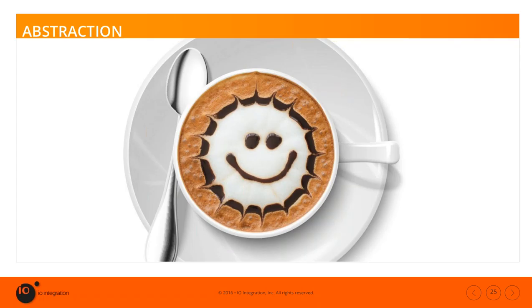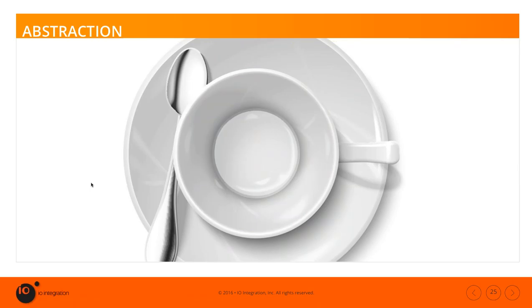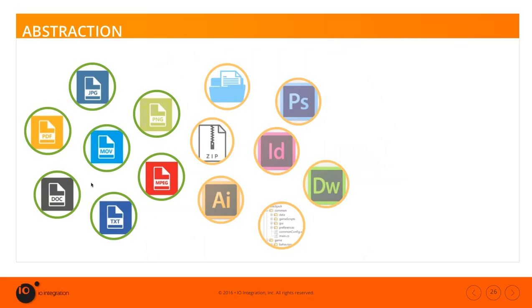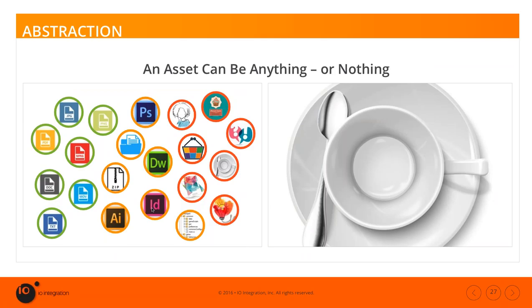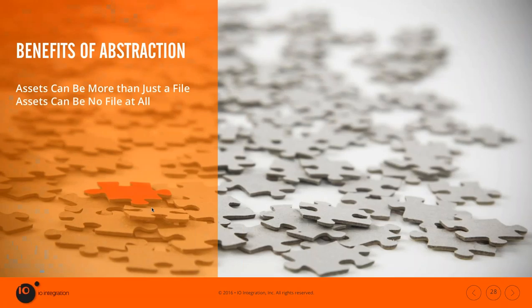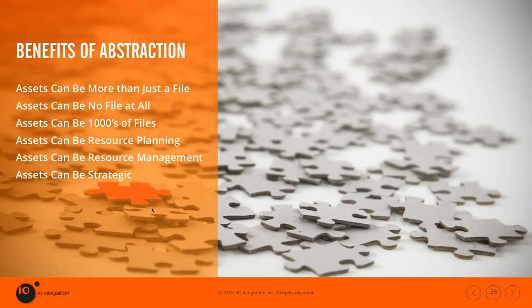Assets do not have to have something concrete associated with them — the assets themselves can be many assets. So are these really DAMs? Can your DAM manage nothing, or the lack of an asset? Most DAM software is essentially digital file management software with very advanced functionality, but still inherently limited in its ability to deal with anything abstract. An asset should be anything you can think of or nothing at all — any kind of asset, even abstract. Abstracted assets can be more than just a single file — they can be thousands of files, things that aren't files like resource planning or people, or they can be strategic things altogether.